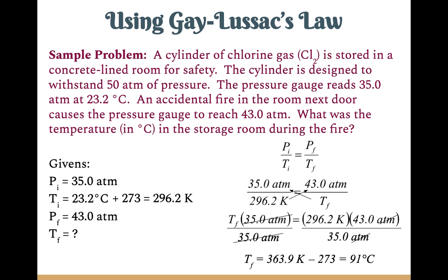Let's check the significant figures. All the values we started with had three significant figures, but our answer only has two. That's because our last step was a subtraction, so we need to look at decimal places. The 273 doesn't have any decimal places, which means our answer cannot have any decimal places. So the answer to the correct number of significant figures is 91 degrees Celsius. That's how you use Gay-Lussac's Law to solve for an unknown pressure or temperature when volume is constant and you have either the initial or final conditions.